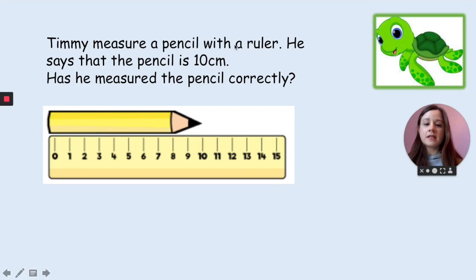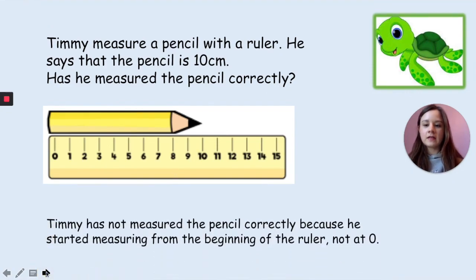Timmy measures a pencil with a ruler. He says that the pencil is 10 centimeters. Has he measured the pencil correctly? Timmy has not measured the pencil correctly because he started measuring from the beginning of the ruler and not at zero. Remember when we're measuring with a ruler we start at zero, not at the end of the ruler.